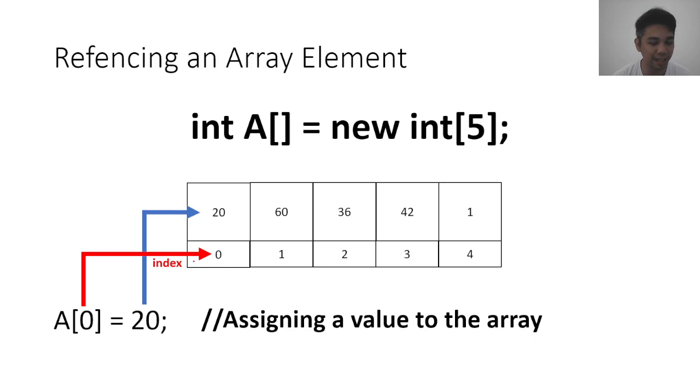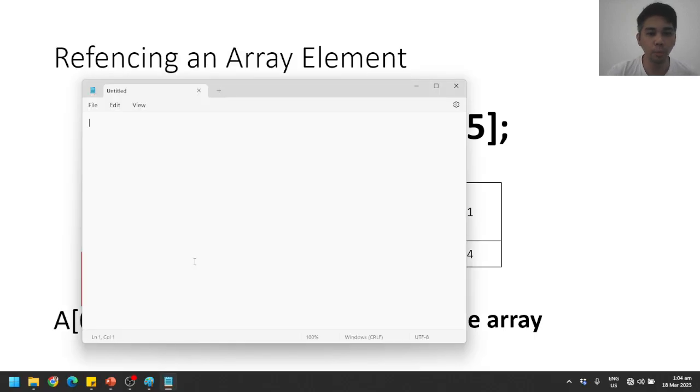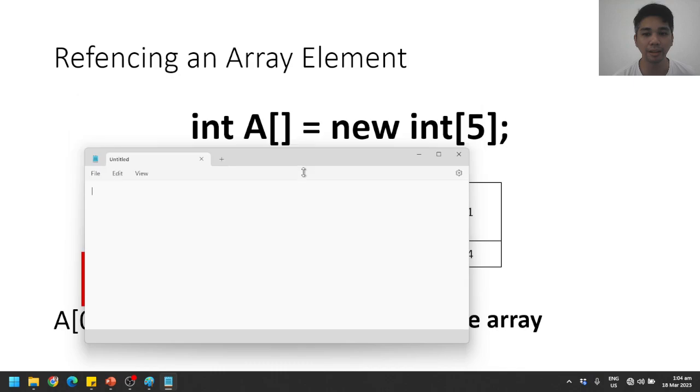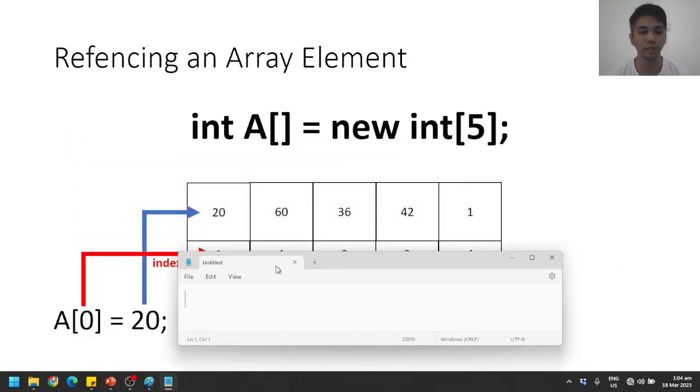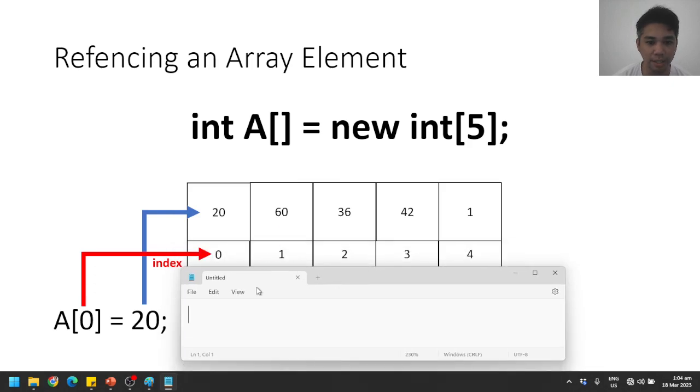It pertains to the index. So for example, we will assign to the second array, we will use a, and the reference index 1 will get 60. So that's how you will write it if you want to assign the value 60 to the second element, a1. Or if you are going to assign 36 to the next array element, it will be a index 2 gets 36. Or the next one is a index 3 gets 42. And the last one is a index 4 gets 1.